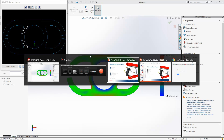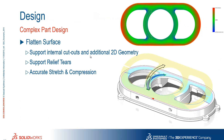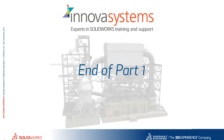Some really nice improvements to the Flatten Surface command in SOLIDWORKS 2016. We can now support internal cutouts and additional 2D geometry, we can support relief tears, and we have an accurate stretch and compression plot. That brings us to the end of part one.